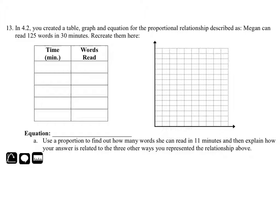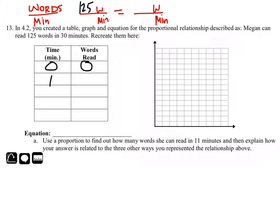All right, in 4.2, we created a table, graph, and equation for the proportional relationship. Megan can read 125 words in 30 minutes. Let's go ahead and recreate these. So, in this one, let's consider zero amount of time. If Megan reads for zero minutes, then she should clearly read zero words. Now, we need to choose these other values. One would be a good value to work with, though. Yes. That way, we can write the equation a little bit easier. So, what I'm going to do is create a proportion based on words compared to minutes. So, right here, we'll create our proportion, and we got words compared to minutes, and then words compared to minutes. So, in the beginning, it told us that it's 125 words for 30 minutes.